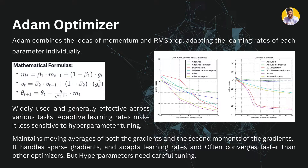Our next optimizer is the Adam optimizer, which is the most widely used optimizer in deep learning, natural language processing, and large language models. Adam combines the idea of momentum and RMSProp, adapting the learning rate for each parameter individually. Unlike SGD which uses a single learning rate, Adam uses a different, adaptable learning rate for each parameter. It is widely effective across various tasks, less sensitive to hyperparameter tuning, and often converges faster than other optimizers.